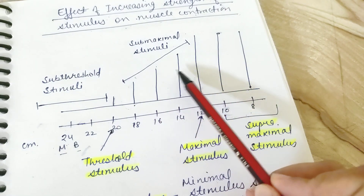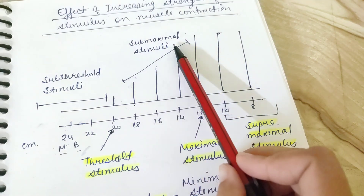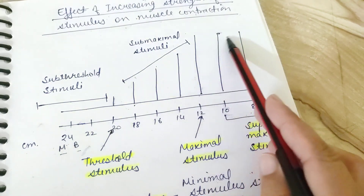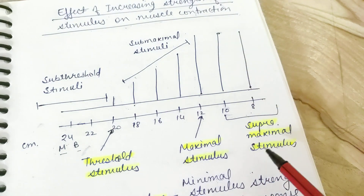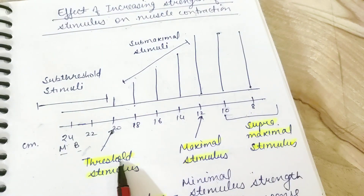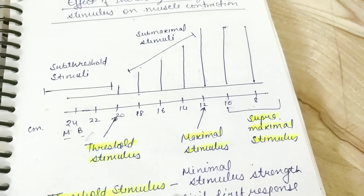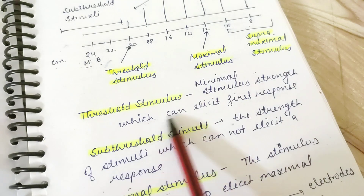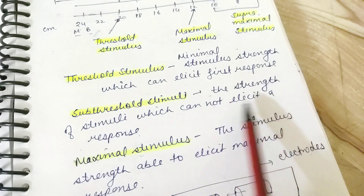The stimulus strengths between threshold and maximal, where the force or tension of muscle contraction increases, are called sub-maximal stimuli. After the maximal stimulus, there is no further change in the height of contraction — all those stimulus strengths are called supra-maximal. So to summarize: sub-threshold, threshold, sub-maximal, maximal, and supra-maximal — these are the viva questions you should know.